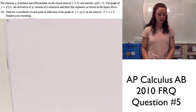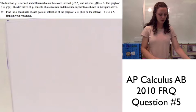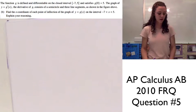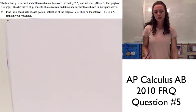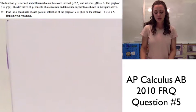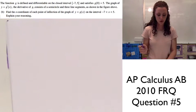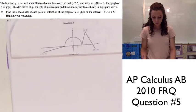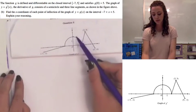Part B asks us to find the x-coordinate of each point of inflection of y equals g of x on the interval negative 7 to 5 and explain our reasoning. A point of inflection occurs where the second derivative equals zero, equivalently where the graph of the first derivative changes from a positive to a negative slope. Looking at the graph, the first one is at x equals 0 where the slope changes from positive to negative.